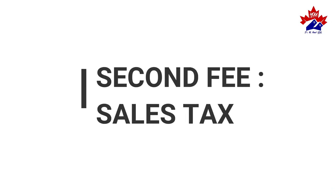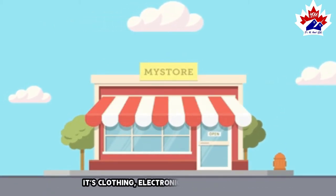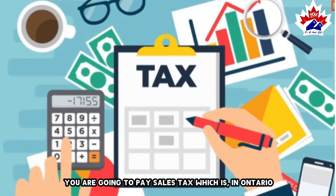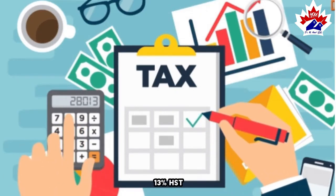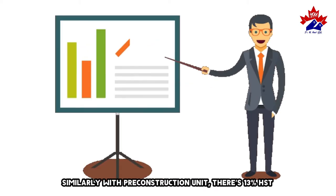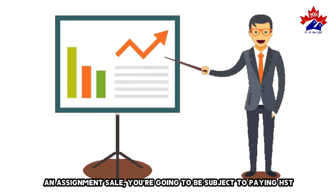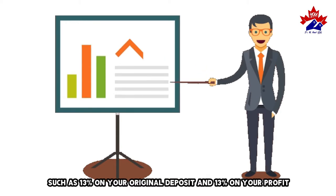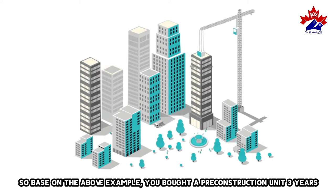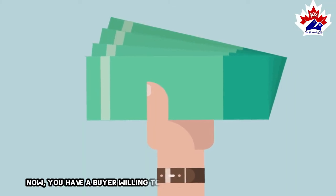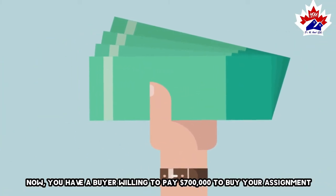The second fee is sales tax. Just as when you go out to buy any type of retail good — whether it's clothing, electronics, or furniture — you are going to pay sales tax, which in Ontario is 13% HST. Similarly, with a pre-construction unit, there's 13% HST built into the purchase price that you are paying. So when you're doing an assignment sale, you're going to be subject to paying 13% HST on your original deposit and 13% on your profit. Based on the above example, you bought a pre-construction unit three years ago at $500,000 and put down a 20% deposit of $100,000, and now you have a buyer willing to pay $700,000 to buy your assignment.